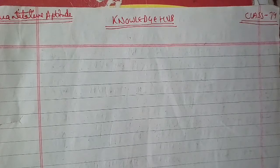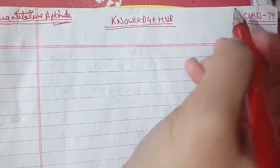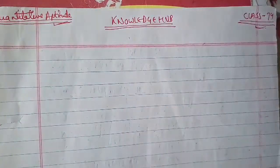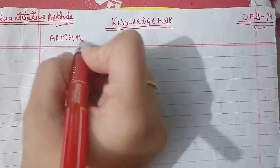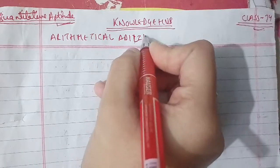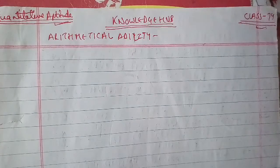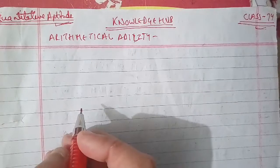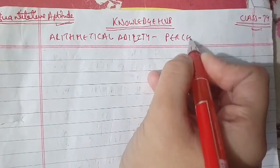Hello everyone, welcome to our channel Knowledge of Friends. Subscribe to our channel and click the bell icon for the latest updates. Today we're going to start with your quantitative aptitude class — this is the 74th class of the session. We had done the 73rd class last session, where in quantitative aptitude we covered arithmetical ability topics including operations on numbers, decimal fractions, simplification, square roots, cube roots, and indices. Now we are dealing with the topic of percentage.